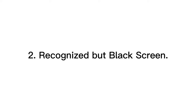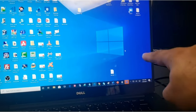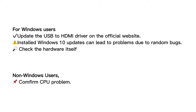Issue 2: Recognize but black screen. First, make sure your USB-C device has the latest drivers. This often happens when you use the adapter or cable for a while, or immediately after a system upgrade. It most frequently affects Windows users upgrading to Windows 10 or 11. If your USB-C to HDMI adapter is not working, the issue might be connected to the dedicated driver, so update the USB to HDMI driver from the official website.